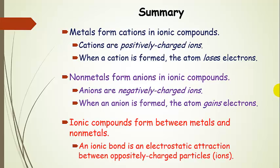So let's just summarize the whole thing. Metals form cations in ionic compounds. They are positively charged ions formed when an atom loses electrons. It has more protons than electrons. That's where that positive charge comes from.